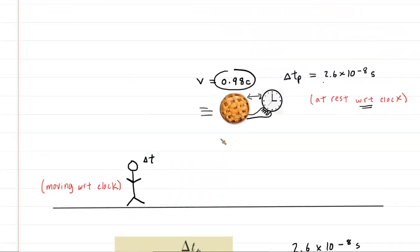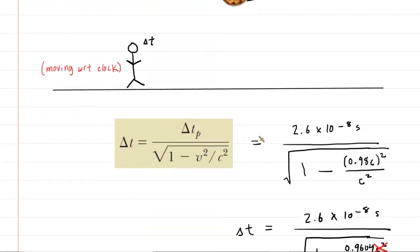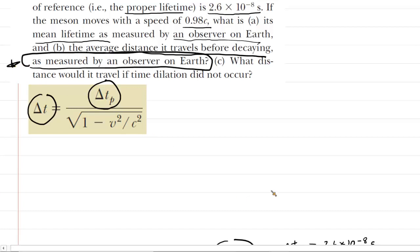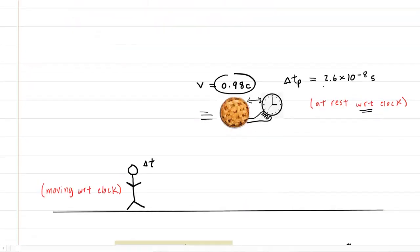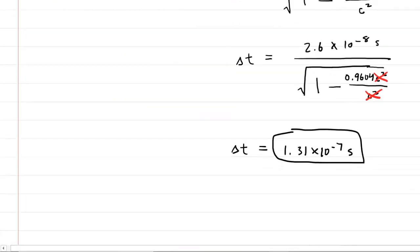We go and look at part b, and it asks us to find the average distance that the pi meson travels before decaying. So it wants a distance. But, and I almost scooted ahead too quickly, as measured by an observer on Earth. That is actually extremely important because that's telling us which time interval we should be using for this calculation, as measured by an observer on Earth. Well, we just figured out the time interval measured by a person or an observer back on Earth. So we should be using that time interval.